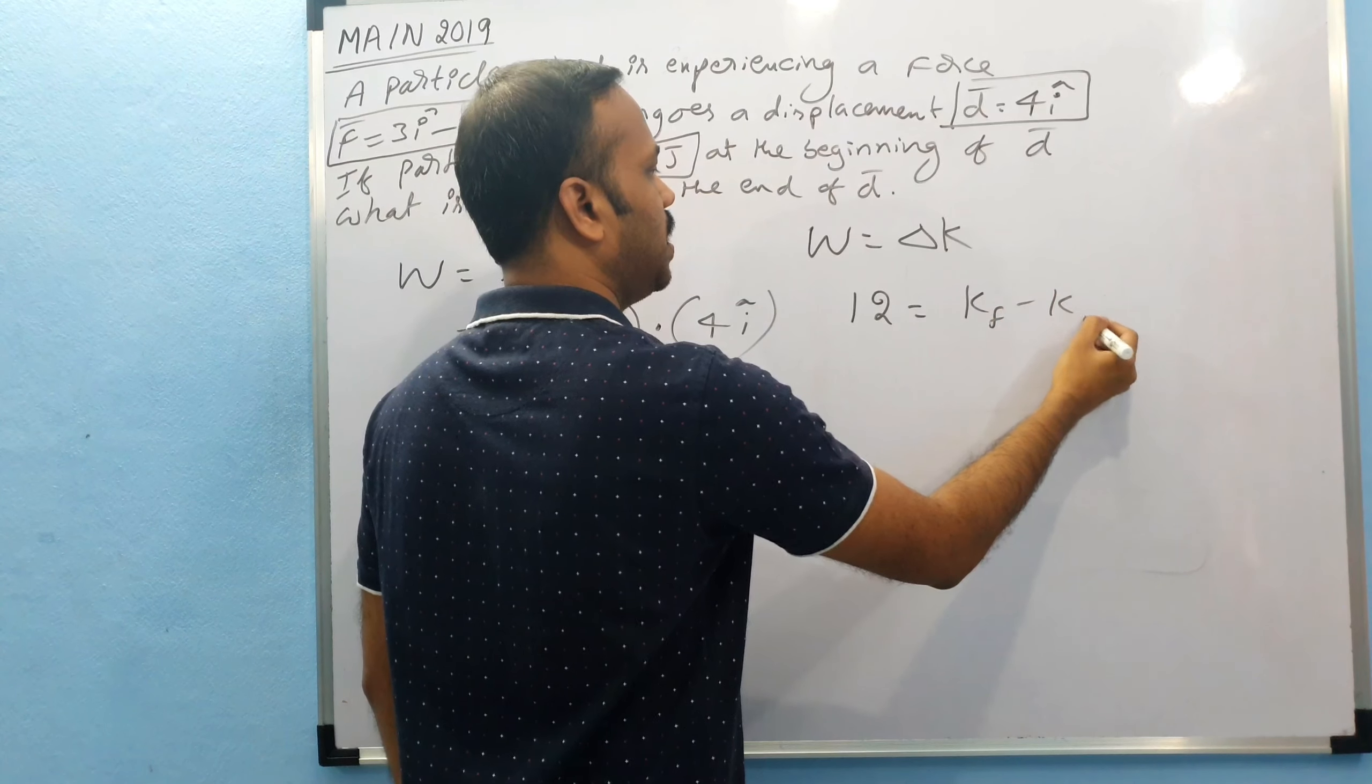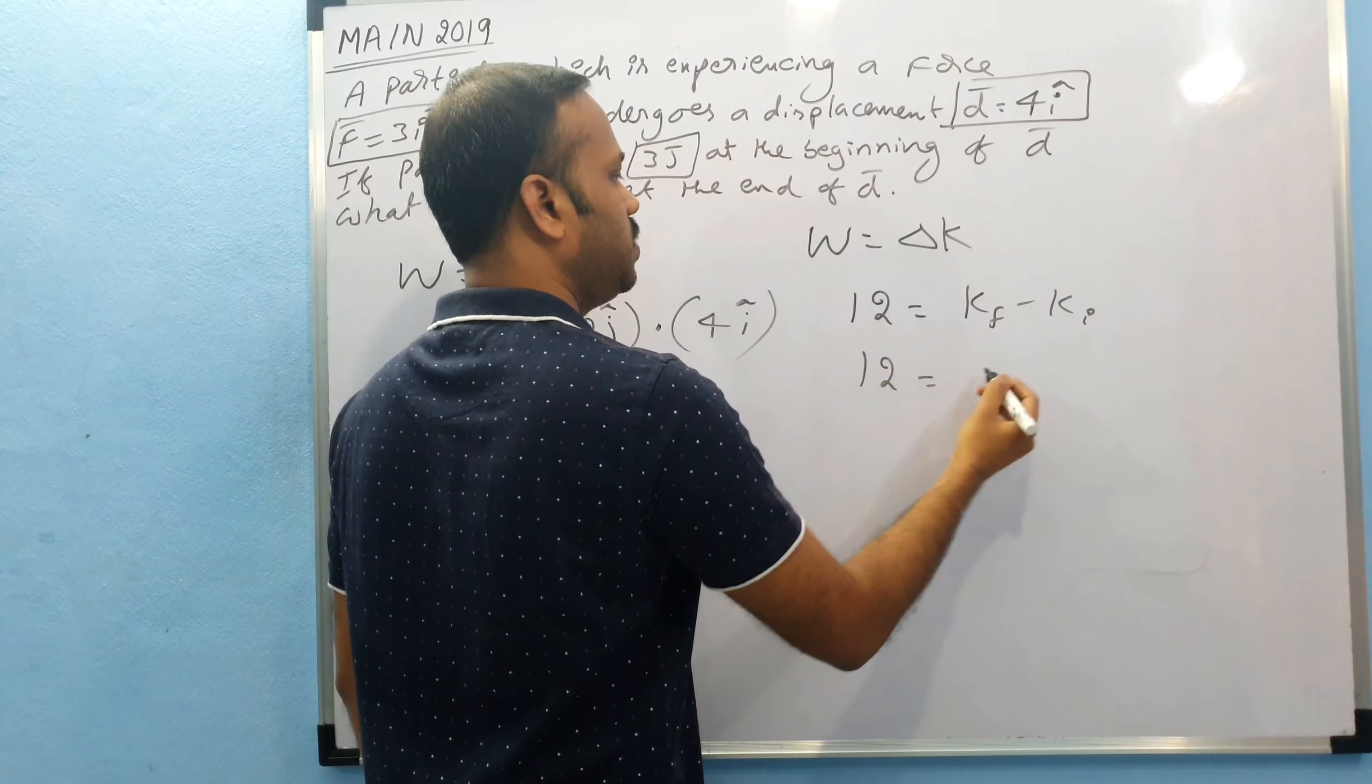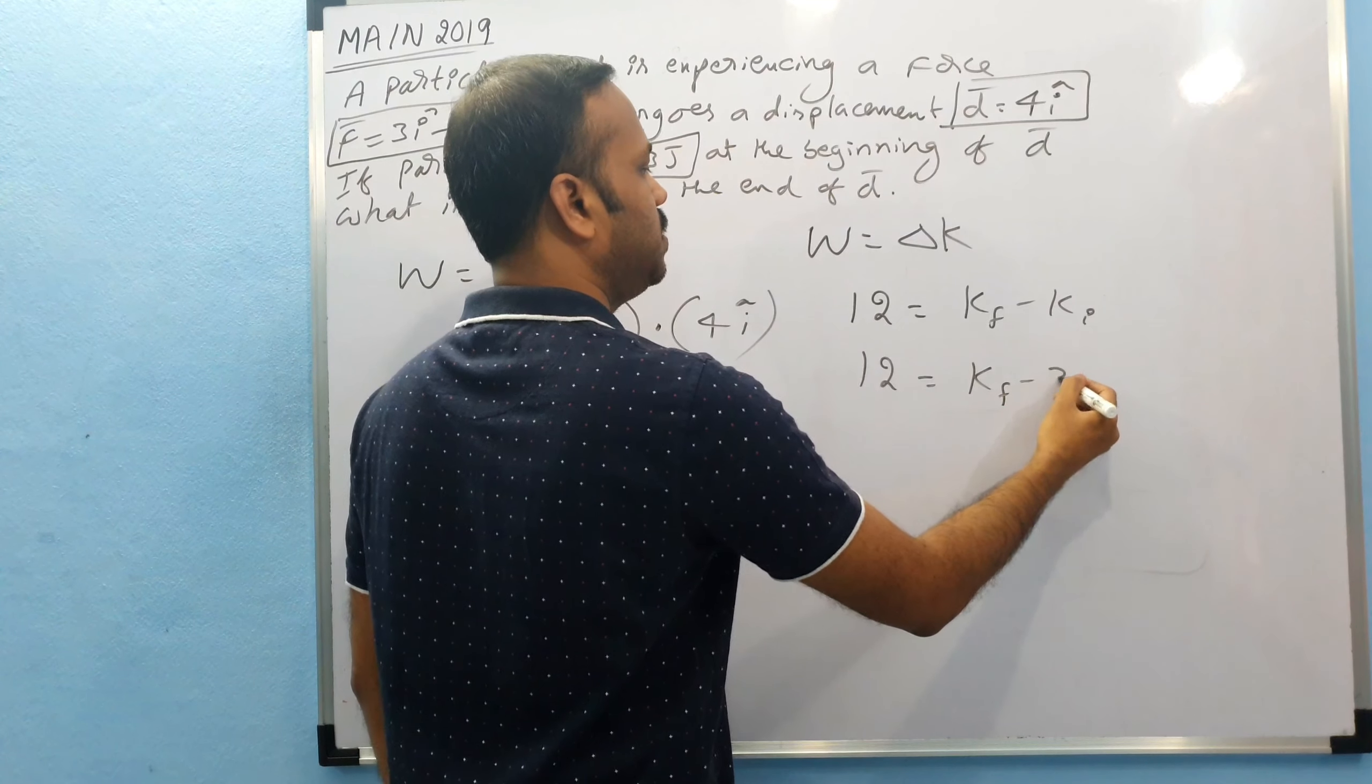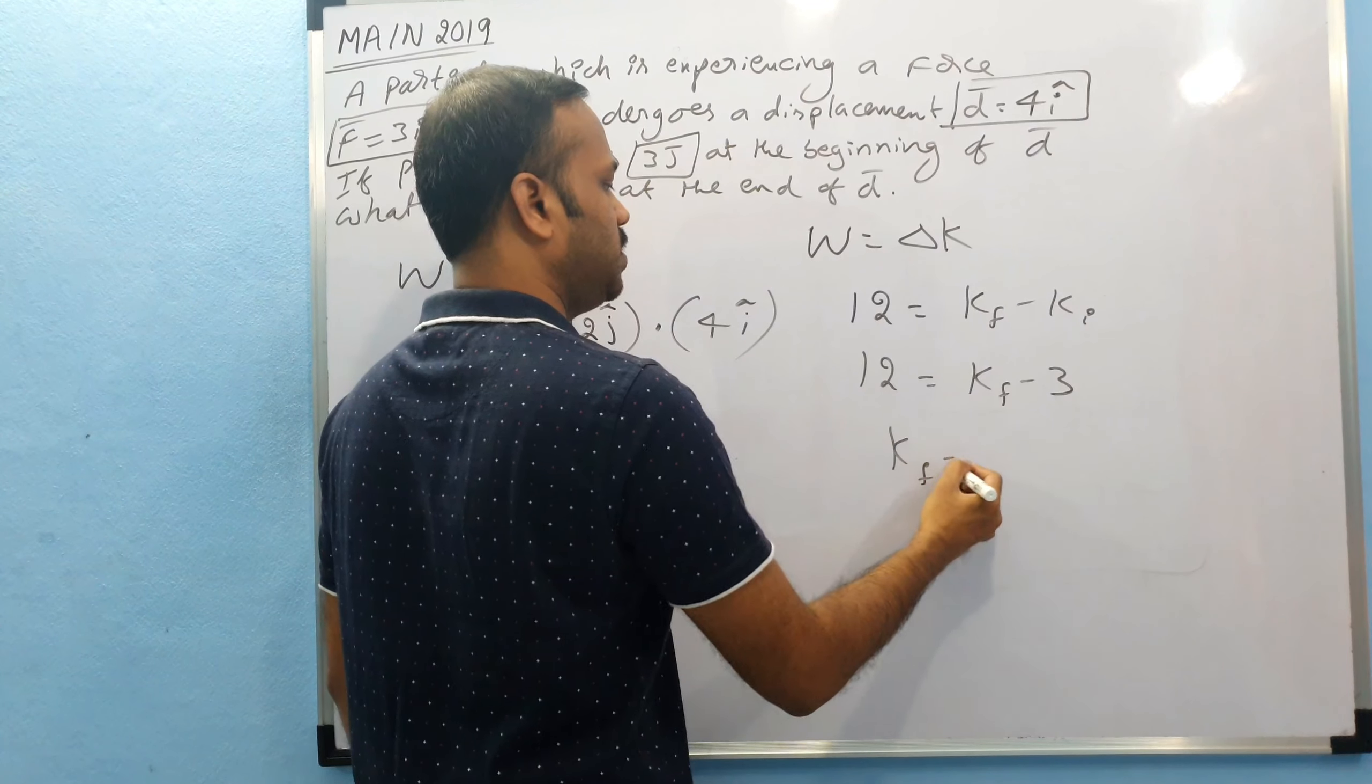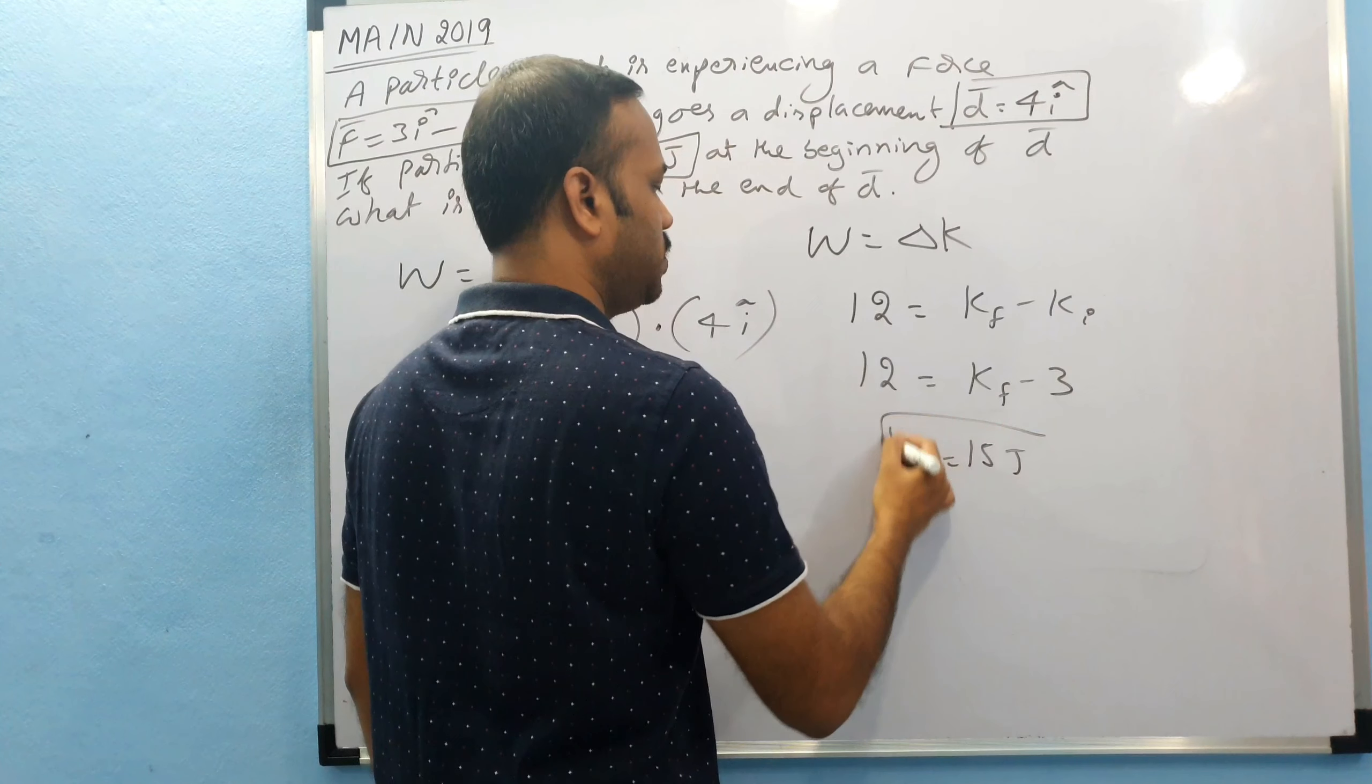Now work done is 12, that equals K_final minus K_initial. 12 joules equals K_final minus 3, so K_final equals 15 joules is your answer.